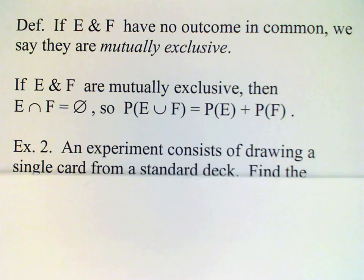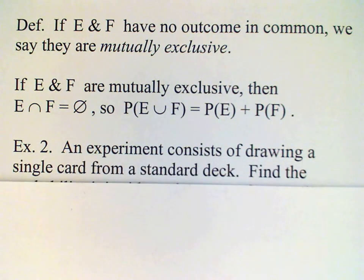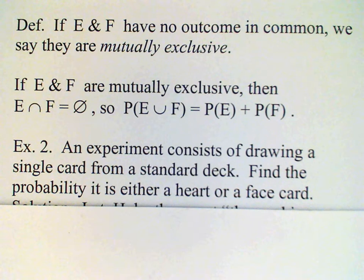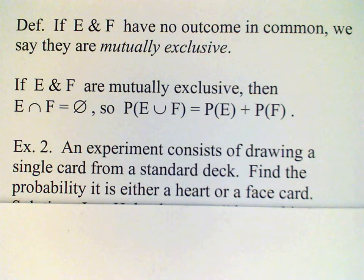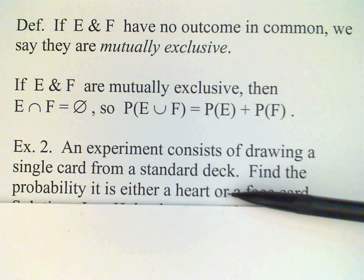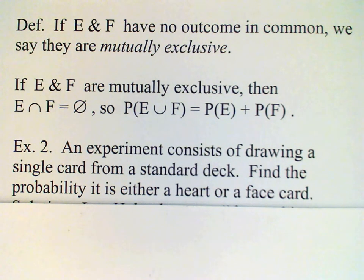So let's look at an example now. We have an experiment which consists of drawing a single card from a standard deck. We want to find the probability that the card is either a heart or a face card. Remember, this word OR indicates that what we need to do is make a union.